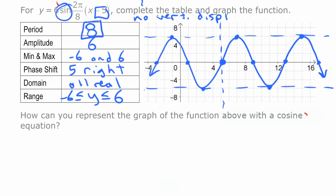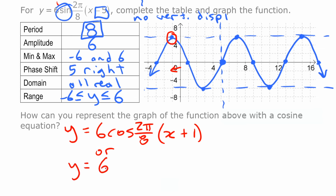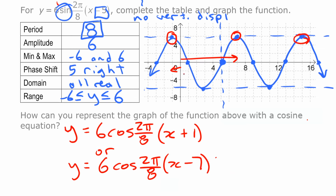The last thing we'll do is write a cosine equation to represent that same function. That was a sine equation graphed from a middle point on the way up, but if it were a cosine curve, one of the maximums would be the starting point. If we use the maximum one unit to the left as the start, the equation would be y equals 6 cosine((2 pi over 8)(x + 1)). Or we could use the maximum 7 to the right — putting x minus 7 — or the maximum at 15 to the right, putting minus 15. There are lots of possible equations, but the only difference between any of them is the phase shift.